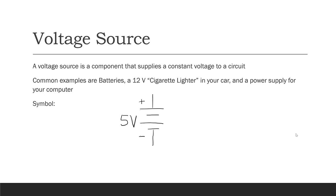The symbol for a voltage source looks like this. There are a couple of things to notice about this. First of all, the voltage is labeled. Here, 5V stands for 5 volts.